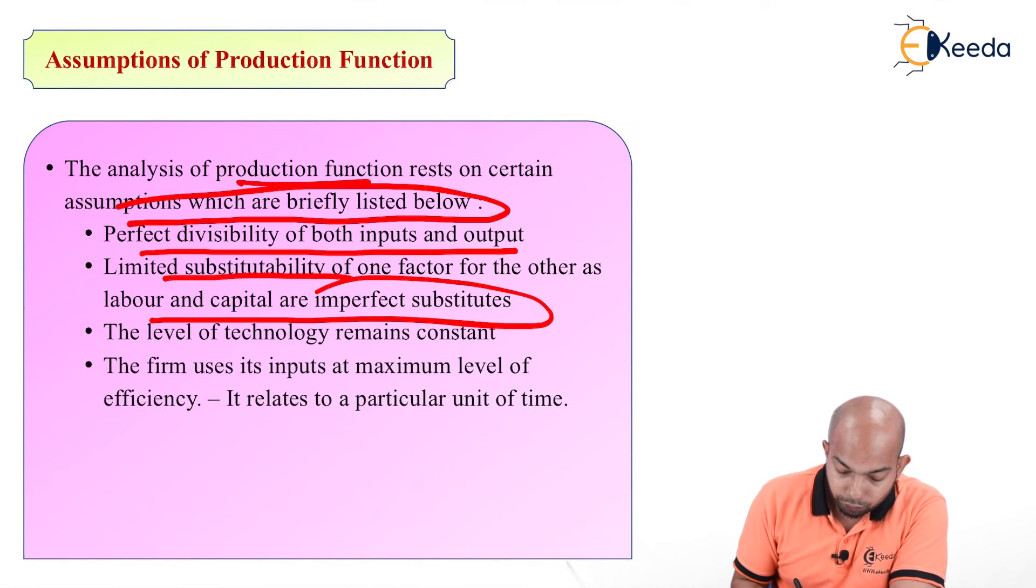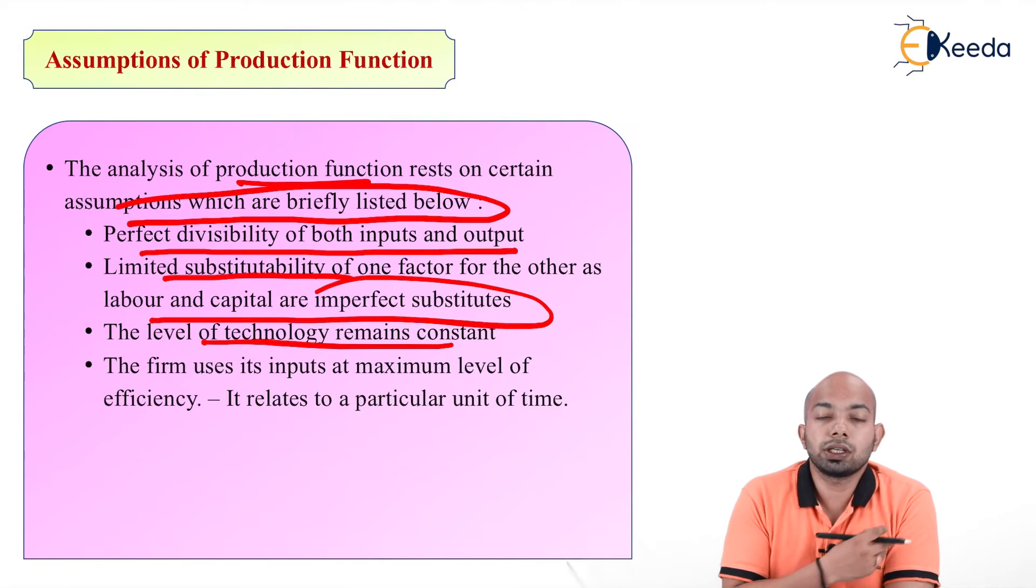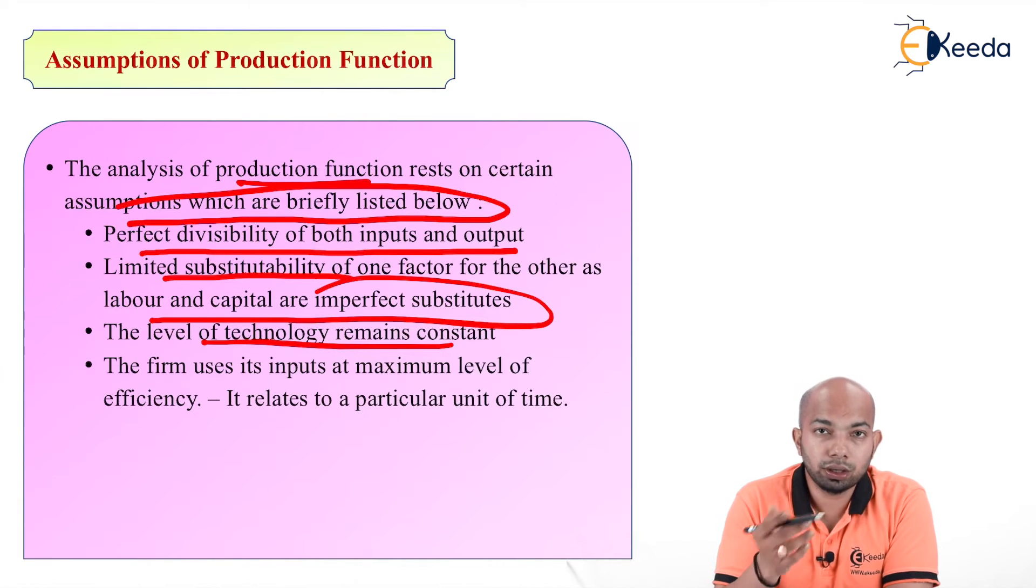Next is the level of technology remains constant. We assume that the level of technology what we had in 1990 is the same thing that we are assuming here. Nothing like that. It may change or it has changed a lot. Hence the assumption goes wrong, but still we assume this.